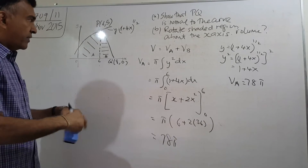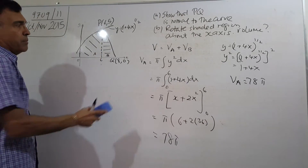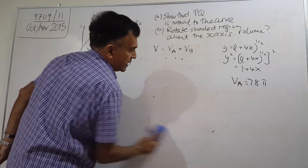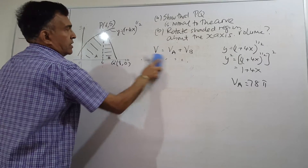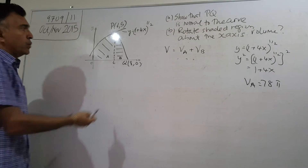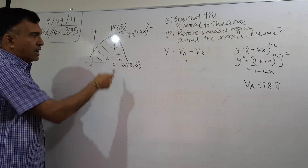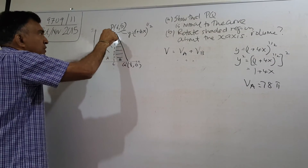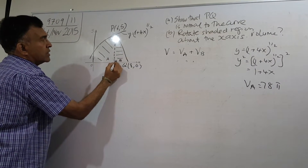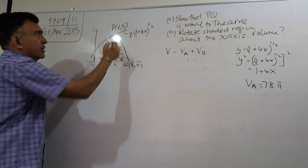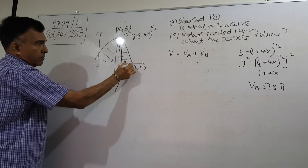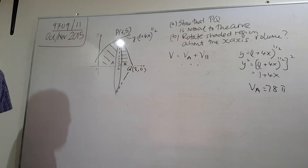Now let's take care of region B. To find the volume generated when you rotate region B about the x-axis — because this is a right-angled triangle — when you rotate it about the x-axis, you're going to get a cone. Let me draw you a cone. This is the cone that you're going to get.